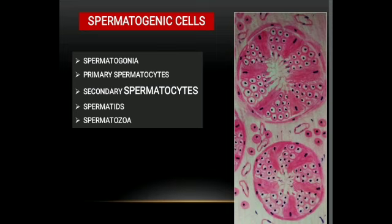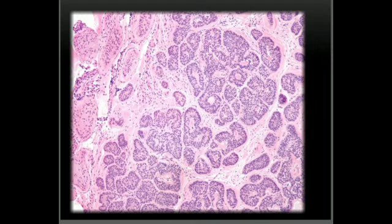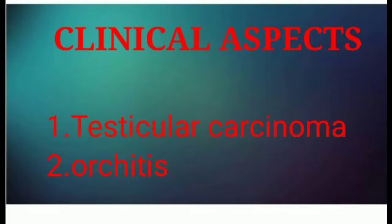So these are the various spermatogenic cells present in the seminiferous tubules: spermatogonial cells, primary spermatocytes, secondary spermatocytes, spermatids, and spermatozoa. This histological slide shows a sectioned seminiferous tubule region, where you can see the various types of spermatogenic cells, as well as the interstitial cells within the connective tissue and blood vessels in between.